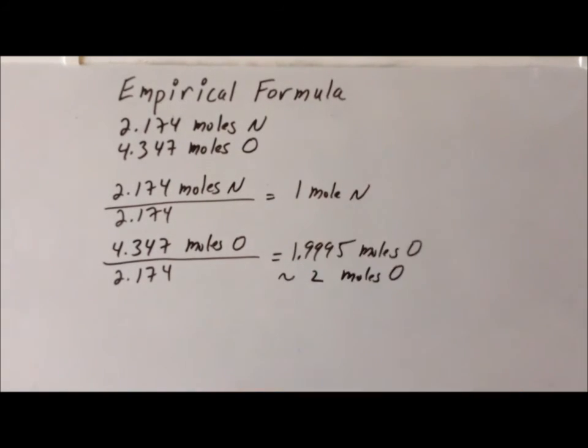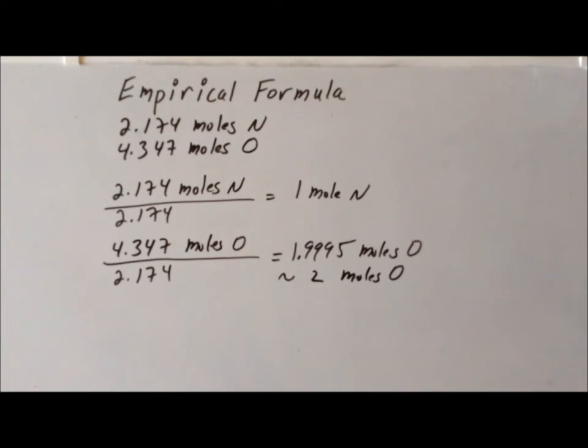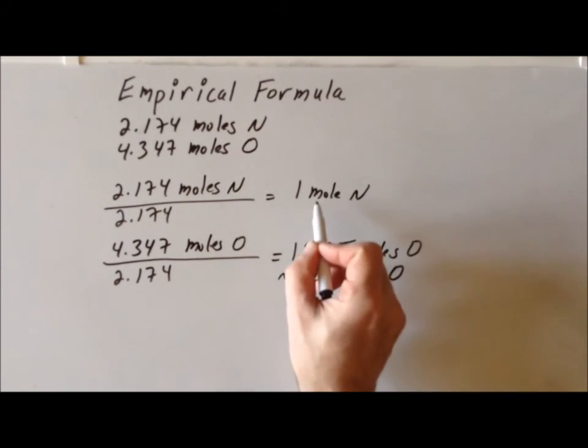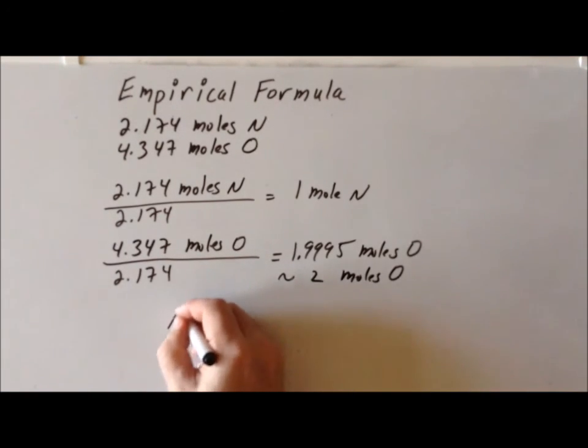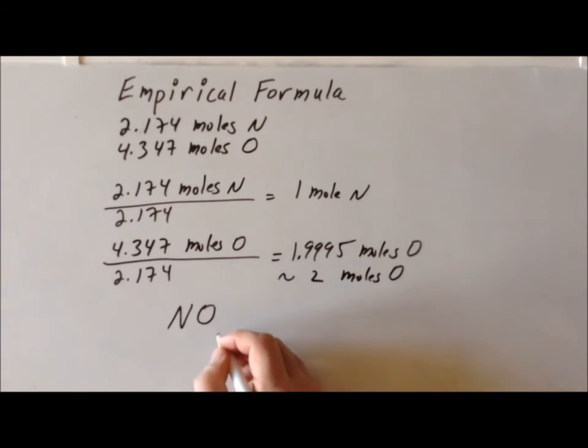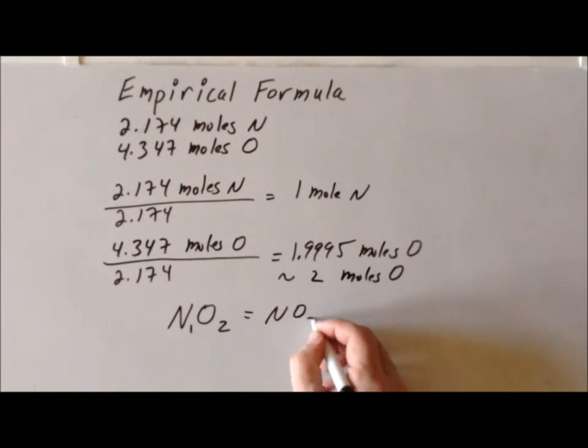Then we notice that we can immediately write down the empirical formula. Notice that we have 1 mole of nitrogen and 2 moles of oxygen. So therefore, our empirical formula looks like NO2. We can say N1O2, but we always omit a subscript of 1 to save space. So we would write this more elegantly as NO2. And therefore, the empirical formula for this particular compound is going to be NO2.